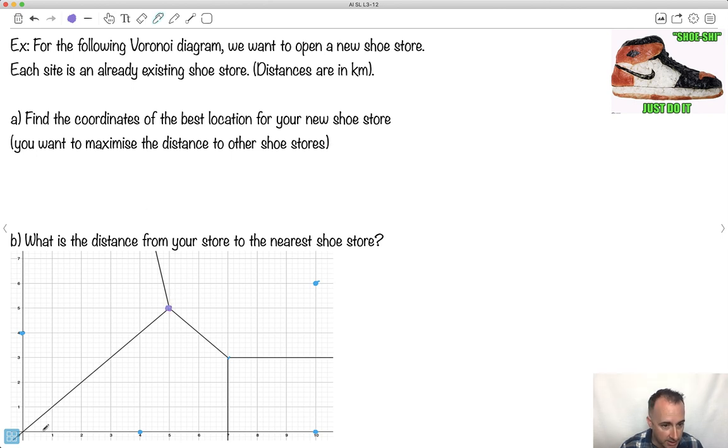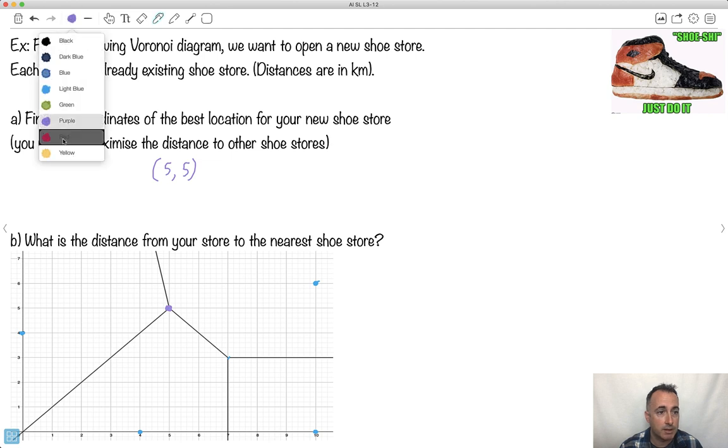So what's the location of that? Well, if we look at this, it looks like it's x equals 5, y equals 5. So I'll say it's got coordinates of 5, 5. That's the best location for my store. Great. I'll place it there.